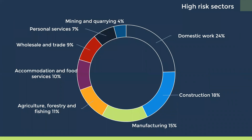If you overlay that country diagnostic with high-risk sectors, the International Labour Organisation has identified the following as high-risk sectors: domestic work is the highest, along with construction, manufacturing, agriculture, forestry and fishing, accommodation and food services, wholesale and trade, personal services, and mining and quarrying. If you're purchasing from any of these sectors and especially ticking the high-risk country box as well, the risk of modern slavery within that supplier increases further.